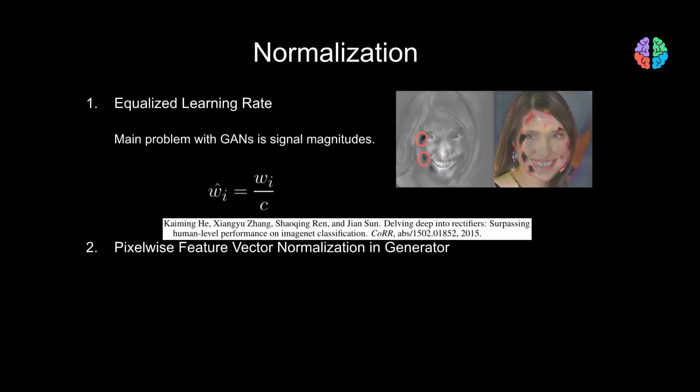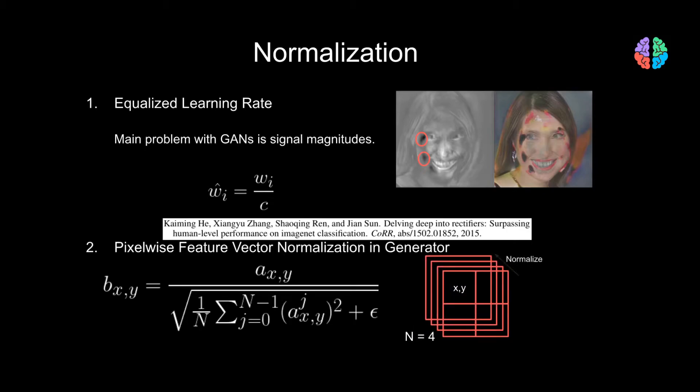The second idea in normalization is the pixel feature vector normalization that is used just in the generator network alone. The equation looks a bit scary, but the idea is fairly simple. Again, let's take a mini-batch of 4 feature maps with a spatial resolution of 2 by 2. Let XY represent the spatial locations. For each feature A at location XY, we pick the values of all the features in the spatial location XY and normalize the feature. In other words, we normalize across the mini-batch, preserving the spatial locations.